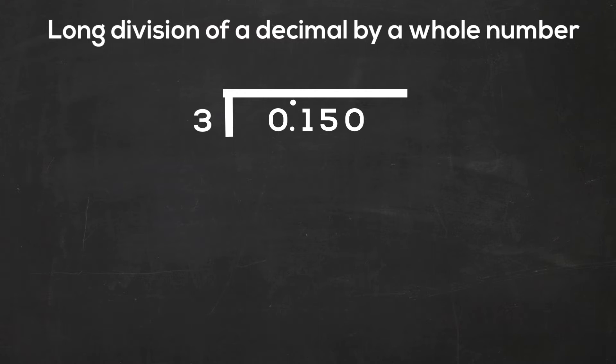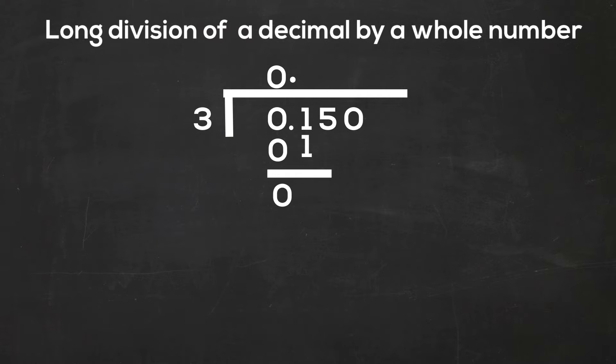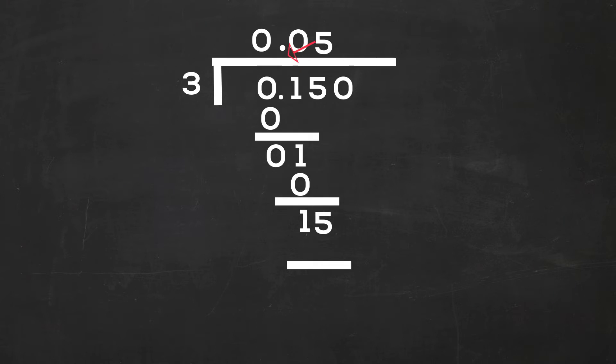First thing I'm going to do is move the decimal point up. 3 goes into 0, 0 times. 3 times 0 is 0, and 0 minus 0 is 0. Now let's bring down the 1. 3 does not go into 1, so 0 times 3 is 0. 1 minus 0 is 1. Bring down the 5. 5 times 3 is 15. 15 minus 15 is 0.